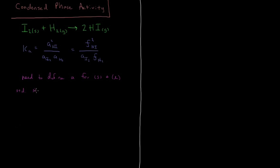The standard state is one bar of pressure. We're going to look at how the chemical potential of a substance changes with respect to pressure. The chemical potential of a chemical substance is defined as the standard chemical potential at a given temperature plus RT times the natural log of its activity. So this chemical potential is a function of temperature and pressure.